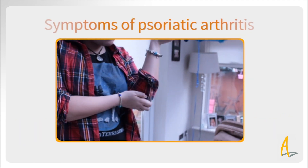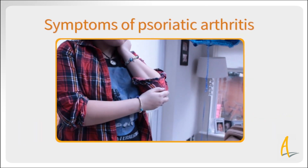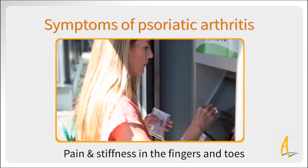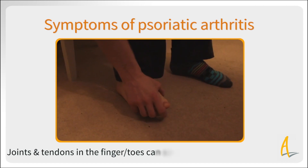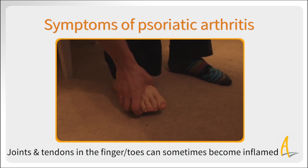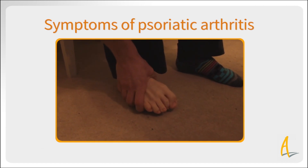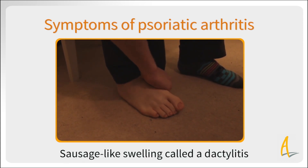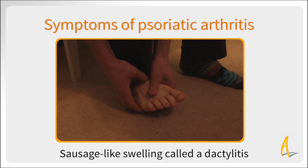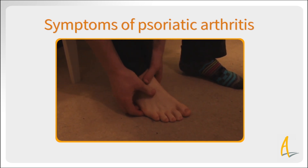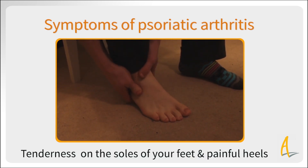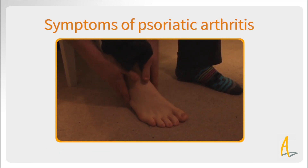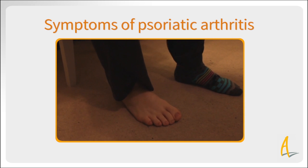Psoriatic arthritis can affect most joints, both large and small, but typically causes problems such as pain and stiffness in the fingers and toes. Joints and tendons in the fingers or toes can sometimes become inflamed, particularly at the end joints, and can produce swelling which looks a little like a sausage, called a dactylitis. Inflammation and tenderness in the ligaments on the soles of your feet and painful heels can make it difficult to move about.